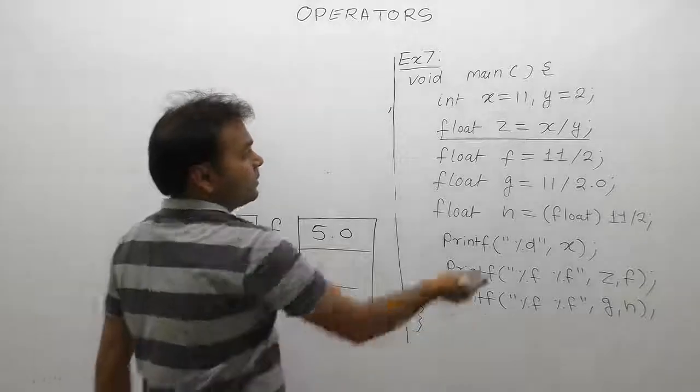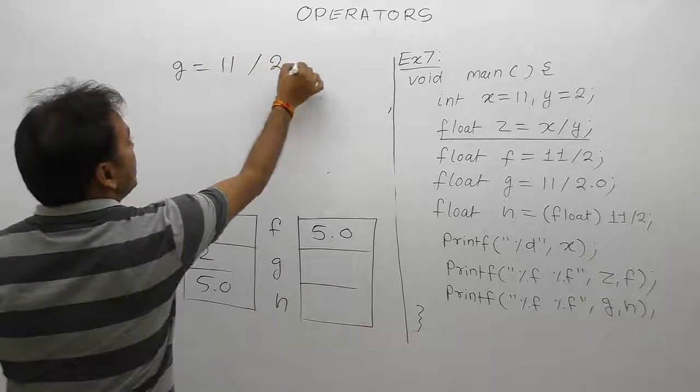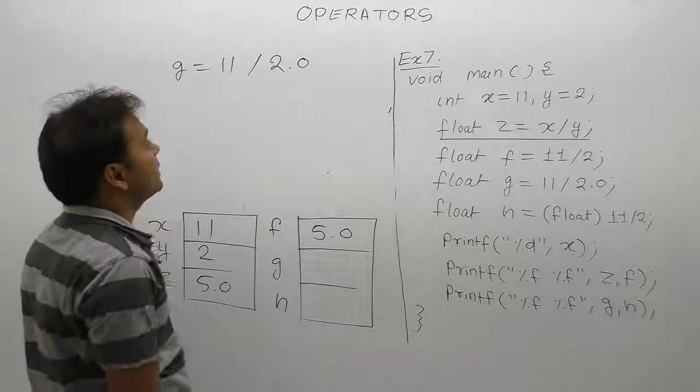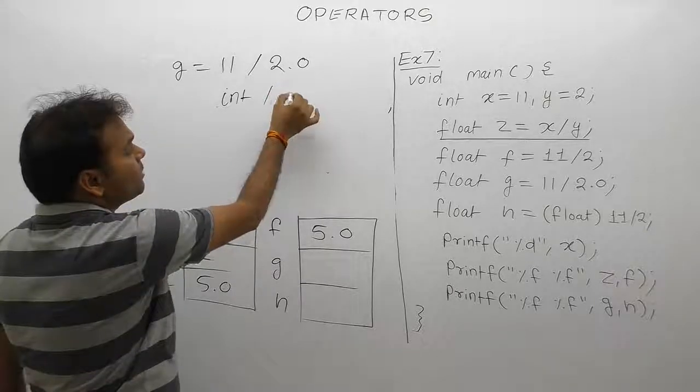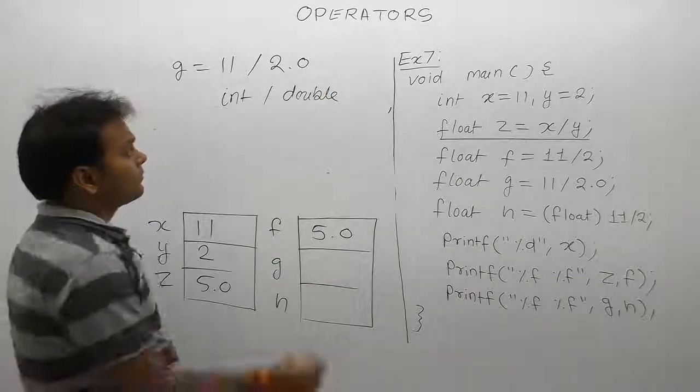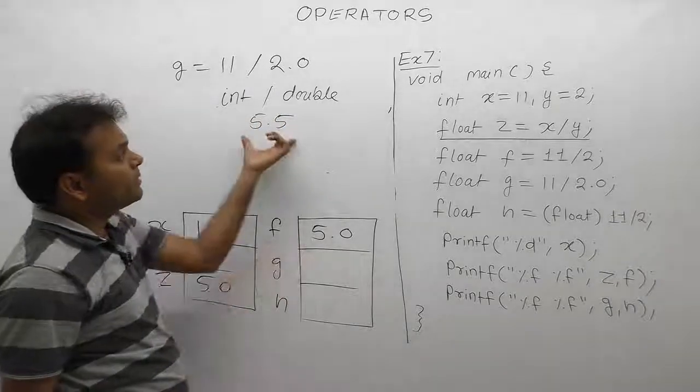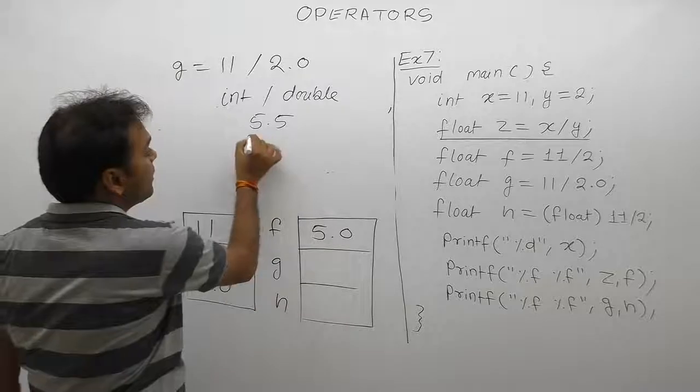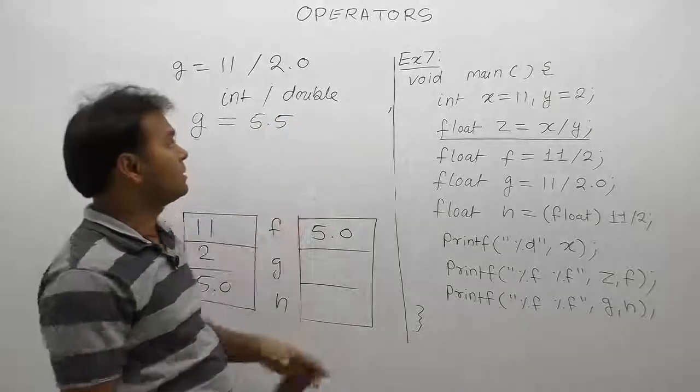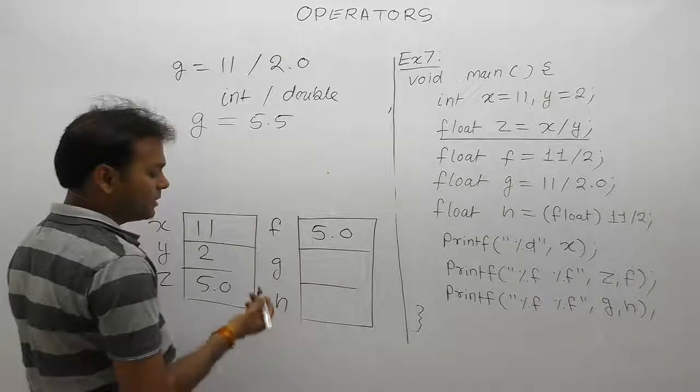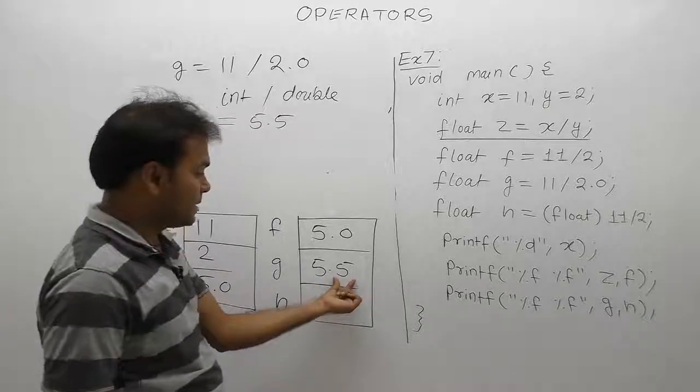In the next one, g equals to 11 divided by 2.0. Again, highest priority goes to division. The first operand is integer and the second operand is 2.0, which by default is double. When one operand is double, the result is also double—5.5. This exact value 5.5 can be represented. After the assignment to g, because the second operand is double type, the result 5.5 is assigned to variable g. Since g is float type, 5.5 is stored with no removal of decimal.